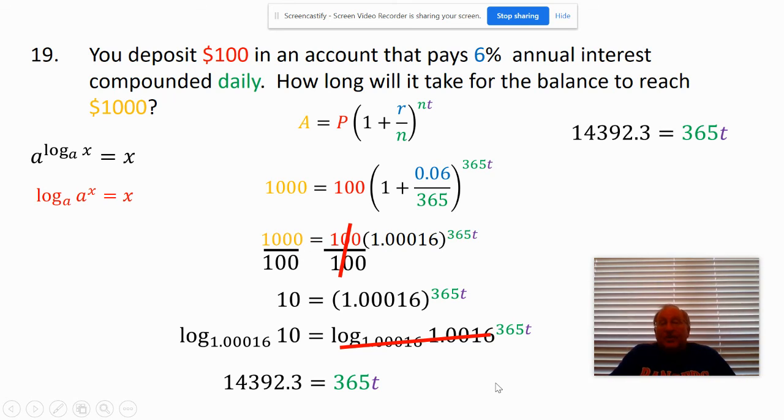Which I'll now divide by 365, and so t turns out to be 39.45 years. So it would take almost 40 years for $100 at 6% interest to reach $1,000.